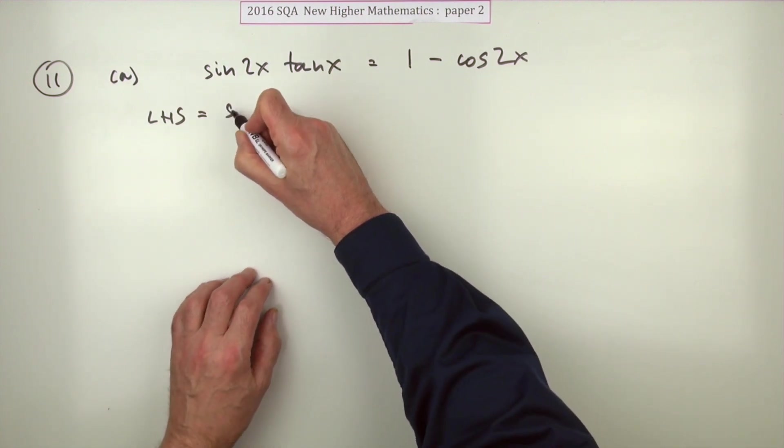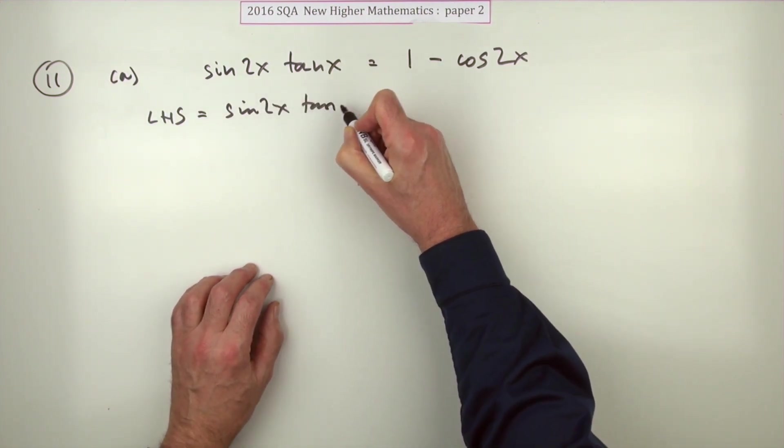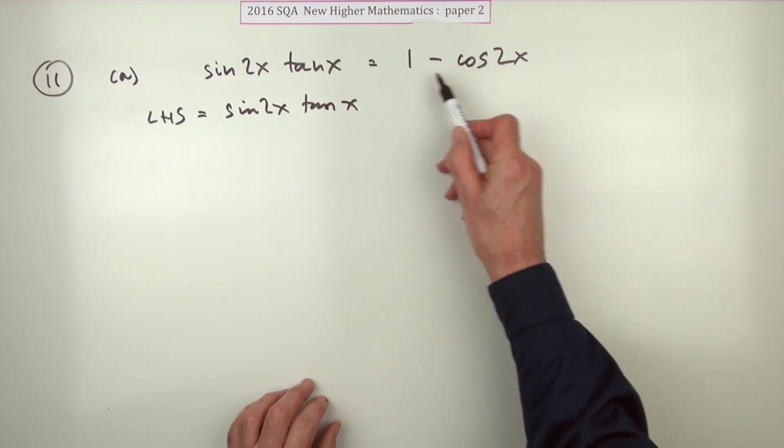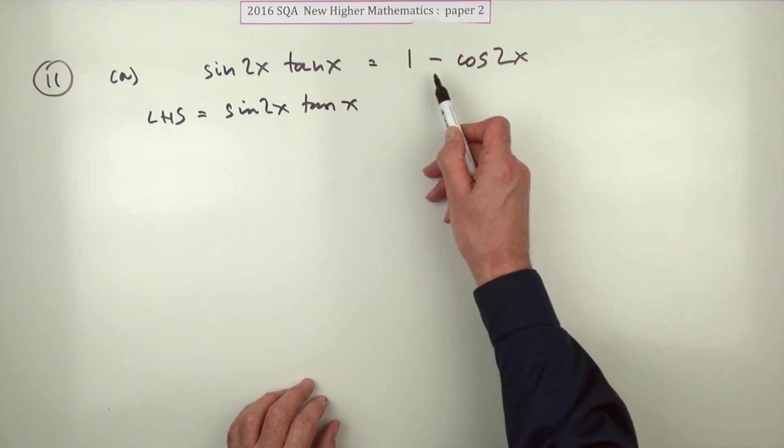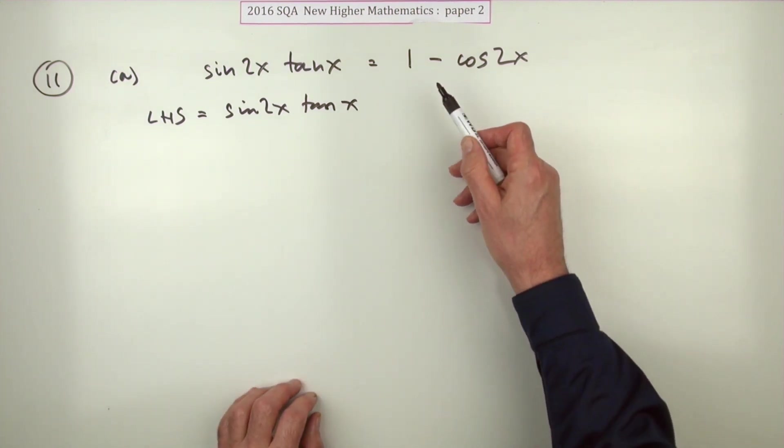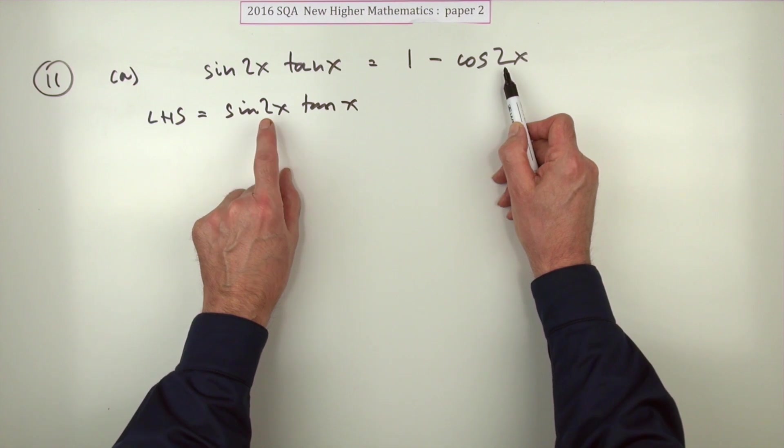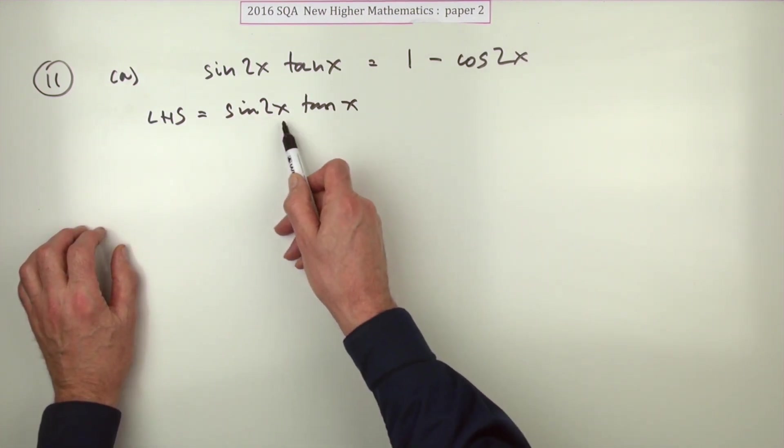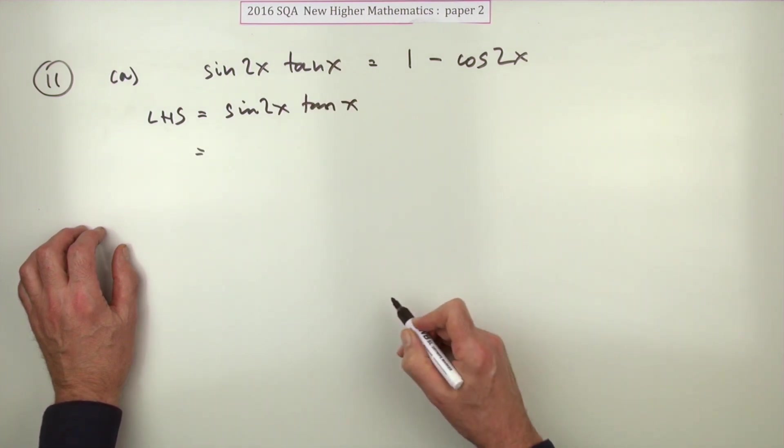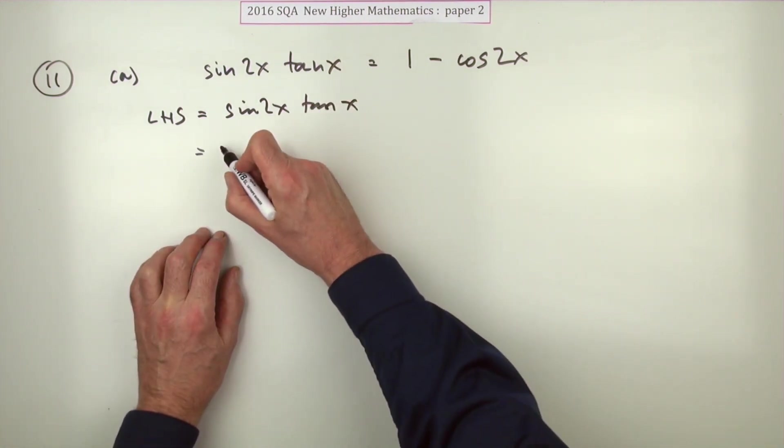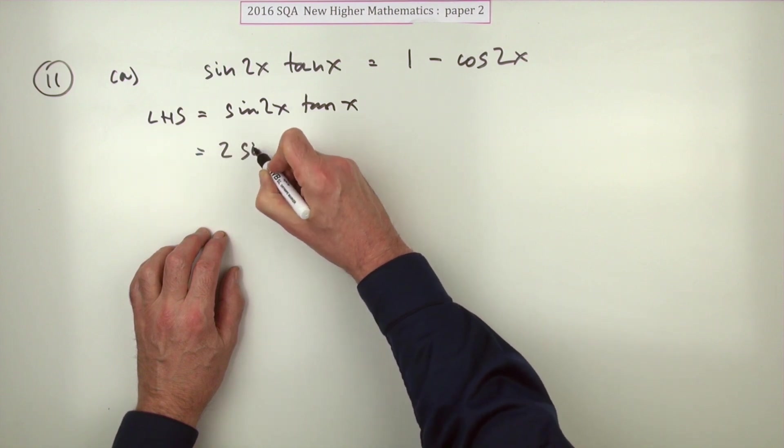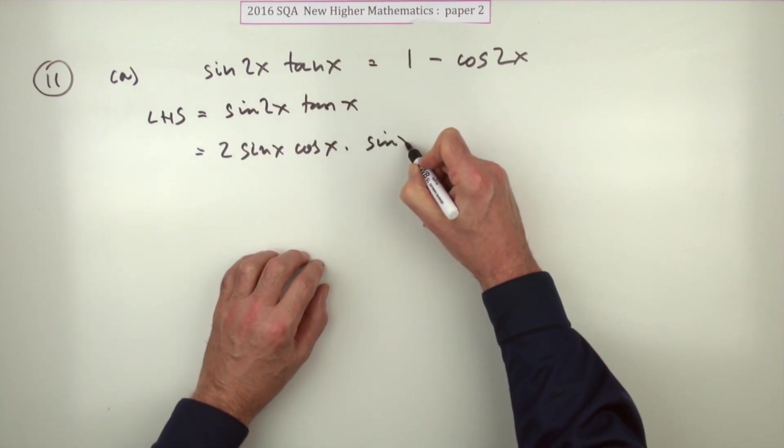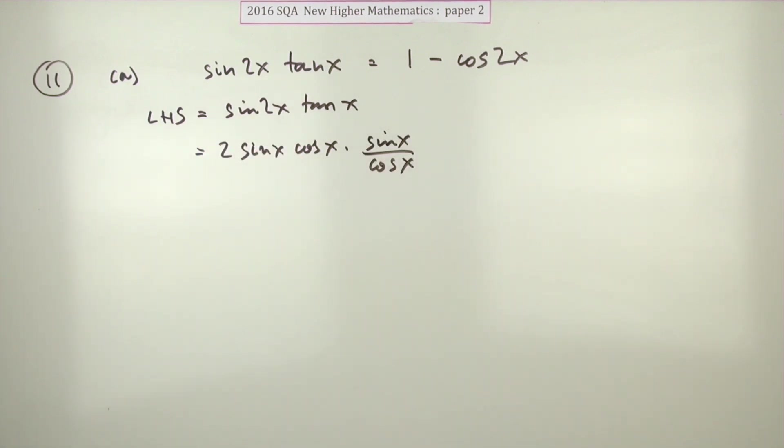The standard way is to take the left-hand side, which is sin(2x)tan(x), and make it look like the right side. First thing you notice is there's no tangents on this side, so I want to get rid of that tangent. Also, there's a 2x here and a 2x there, but there's no sines mentioned on this side, so I'm going to be getting rid of this as well just to see what happens. You know both of those things: sin(2x) can be rewritten as 2sin(x)cos(x), and tan(x) can be written as sin(x)/cos(x).